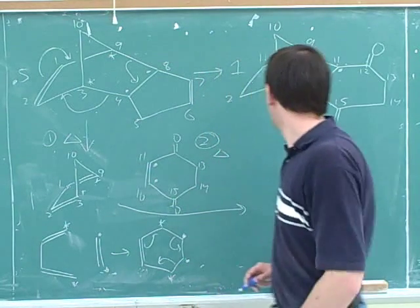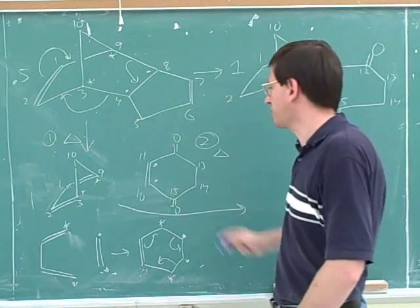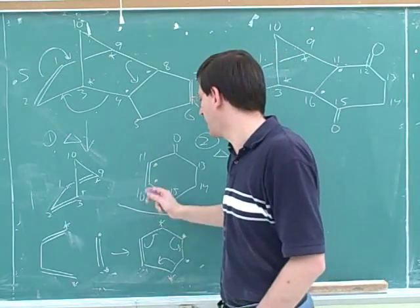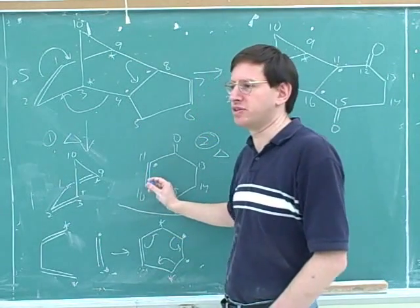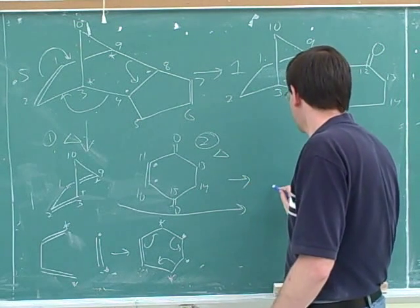All right, so this is the dienophile that we need to add. It looks a lot like this over here. And I think, again, putting in the numbers and the dots makes it much clearer. Remember that before the Diels-Alder reaction happens there has to be a pi bond between these two dots. That's the major change that we need to make over here. And then what would this product look like?